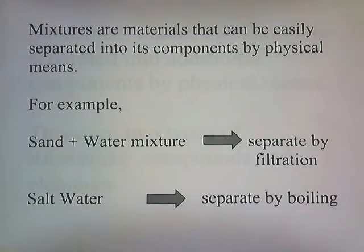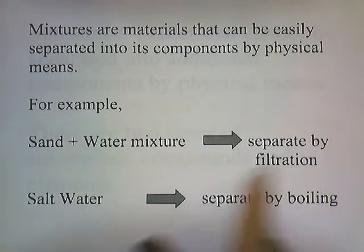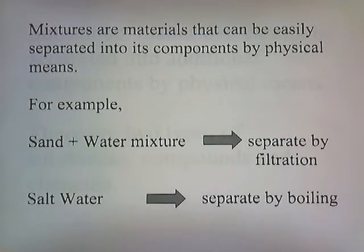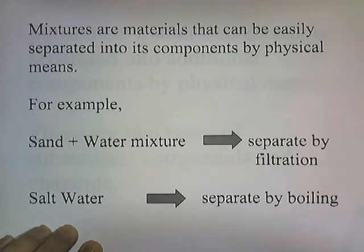Mixtures are materials that can be easily separated into their components by physical means. For example, a sand and water mixture can be separated by filtration — if you pour a bucket of sand mixed with water through some filter paper, the water will go through the paper and the sand will get caught behind. A salt water mixture can be separated by heating the mixture and boiling off the water. So we're using physical means to separate the components of these materials.